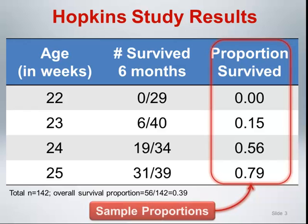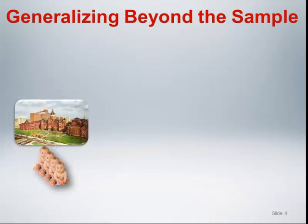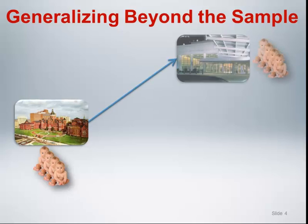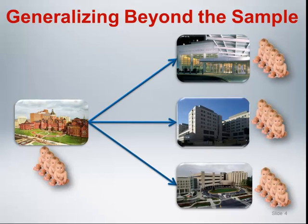We refer to these survival proportions as sample proportions because they are calculated from the data we have collected. Presumably, the goal of the investigators is to use the results from their sample to make generalizations beyond the Hopkins context to inform decisions at other similar institutions in the future. Formally, we can say that the interest is in using these sample survival proportions to estimate population survival proportions.